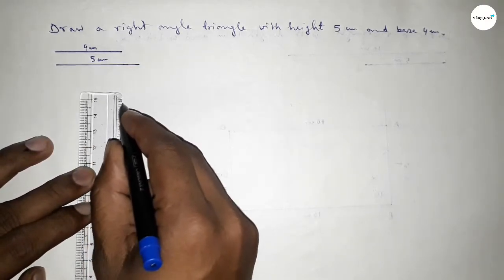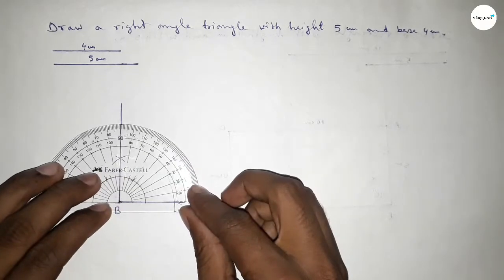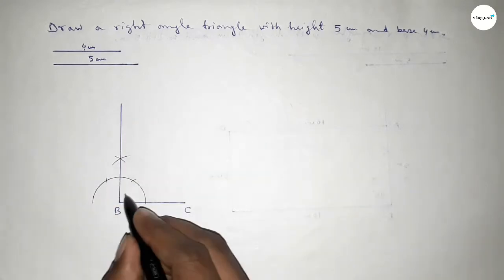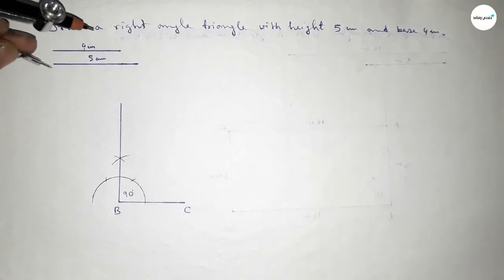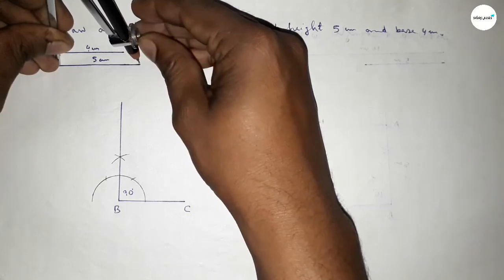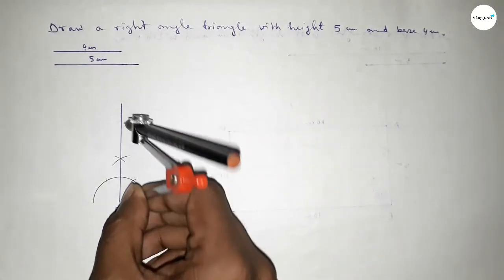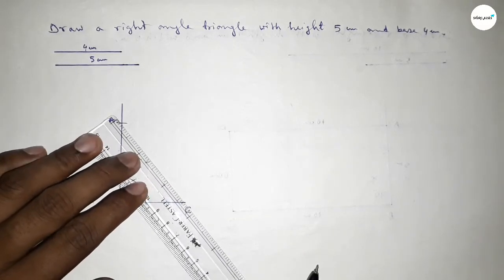Now checking whether it is 90 degree or not — this is perfectly 90 degree. Now taking the length of height 5 centimeter, putting the compass here and cutting here, taking here point A.